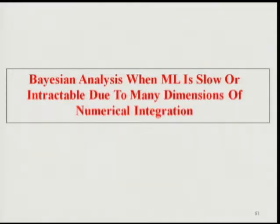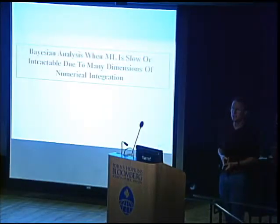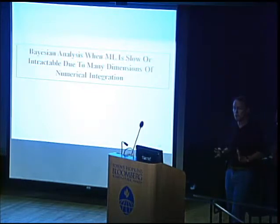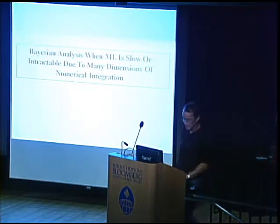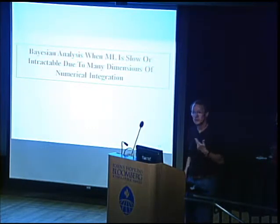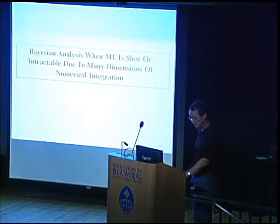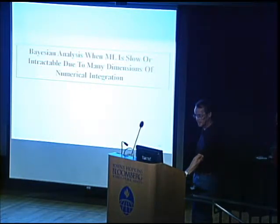Some of you may not be convinced yet about Bayesian analysis. Now I'm going to show that we can do things that ML cannot do — even with totally non-informative priors. You can think of it almost like an algorithm — not to get exactly ML estimates, but to get statistically the same estimates — yet computationally feasible for models that ML cannot handle.